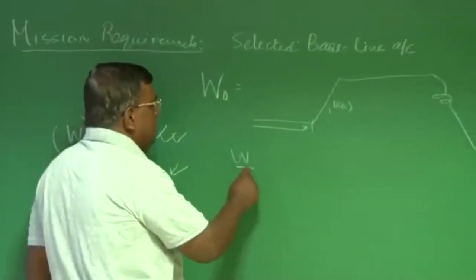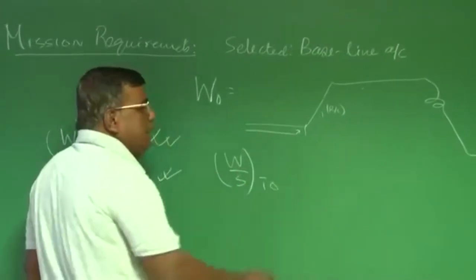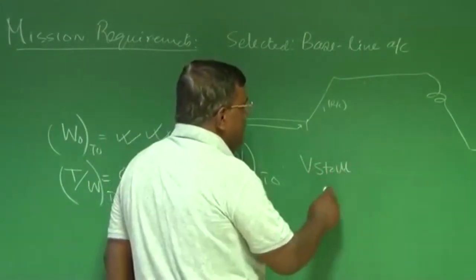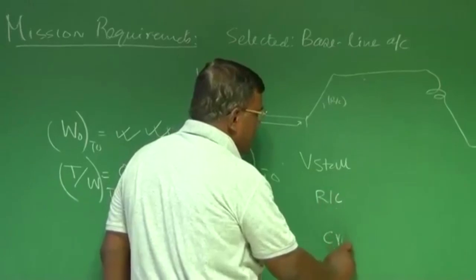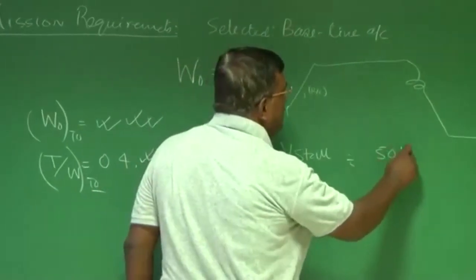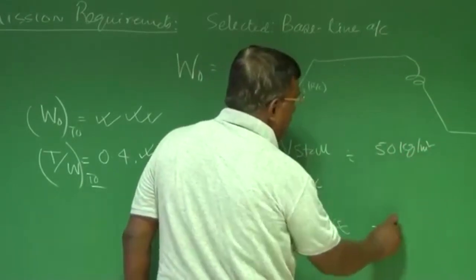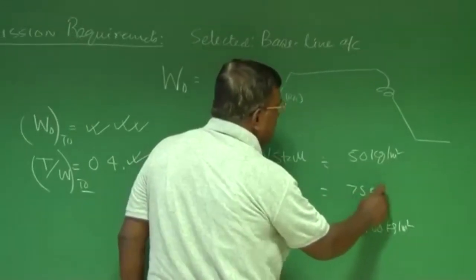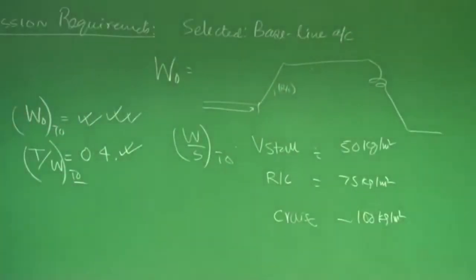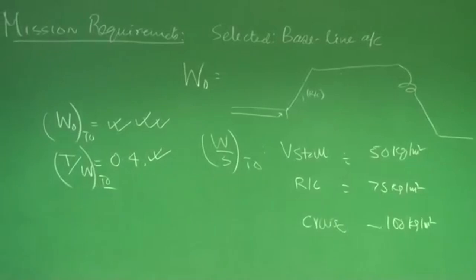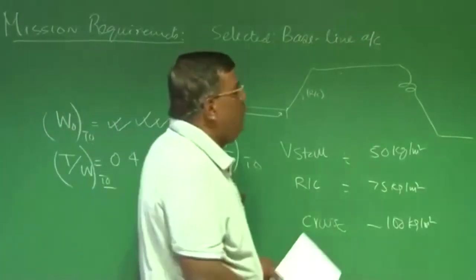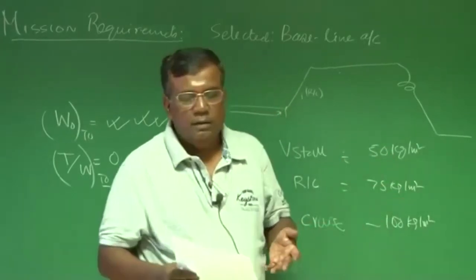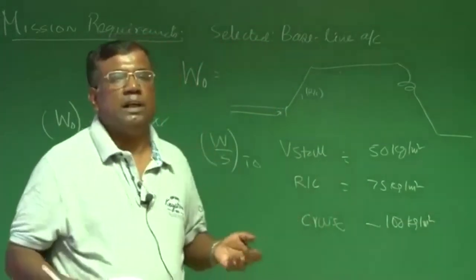Then we talked about W/S — wing loading. We have different mission criteria: as far as V stall is concerned, rate of climb is concerned, cruise is concerned. Let us say we got 50 kg/m² from stall criteria, 100 kg/m² from cruise, and 75 kg/m² from climb. The question was: which one should I pick? Ideally everyone recommends taking the lowest W/S, meaning your wing area is relatively large and it will support lifting characteristics. But if wing area is large, there will be a drag penalty.